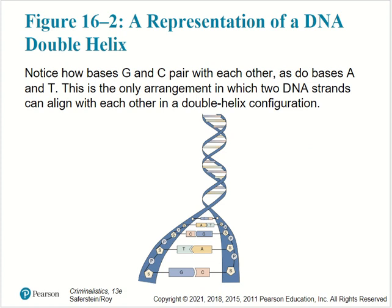A representation of a DNA double helix shows how bases G and C pair with each other, as do bases A and T. This is the only arrangement in which two DNA strands can align with each other in a double helix configuration.